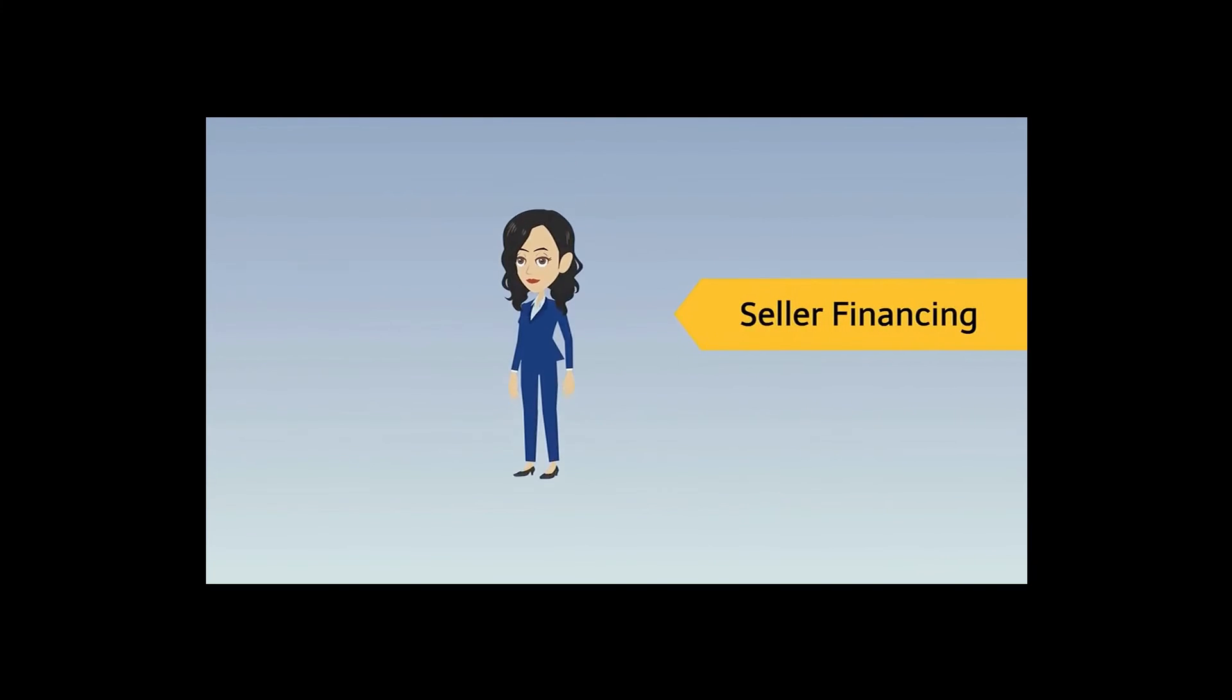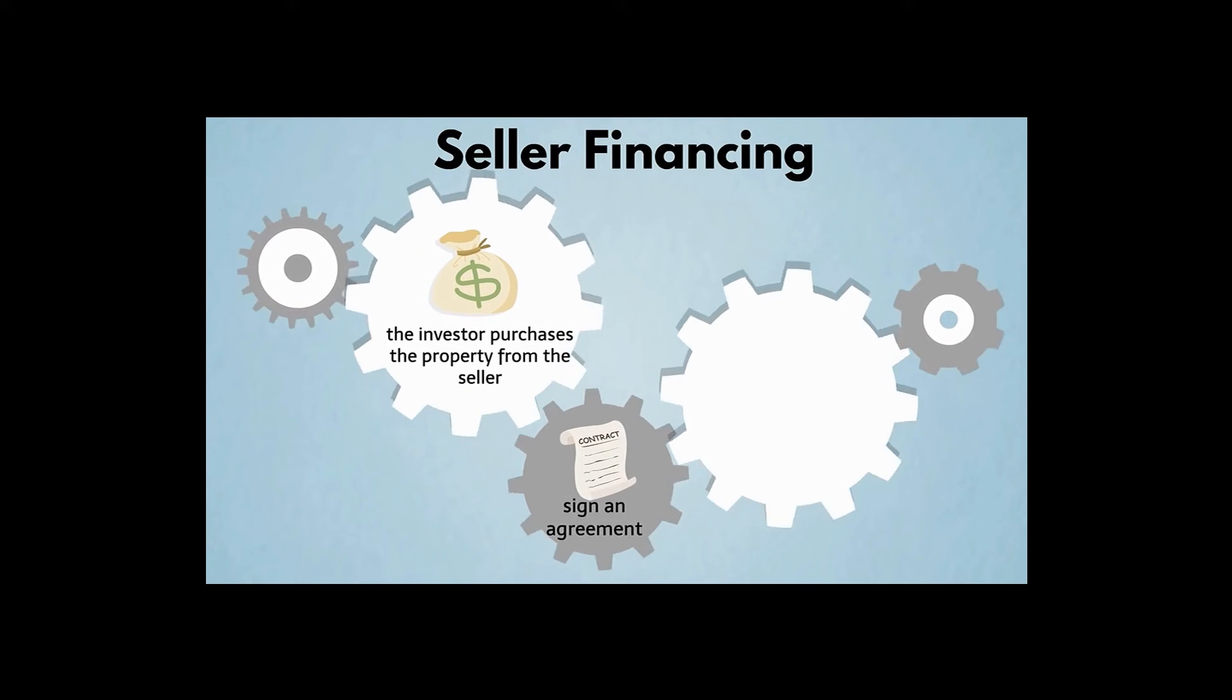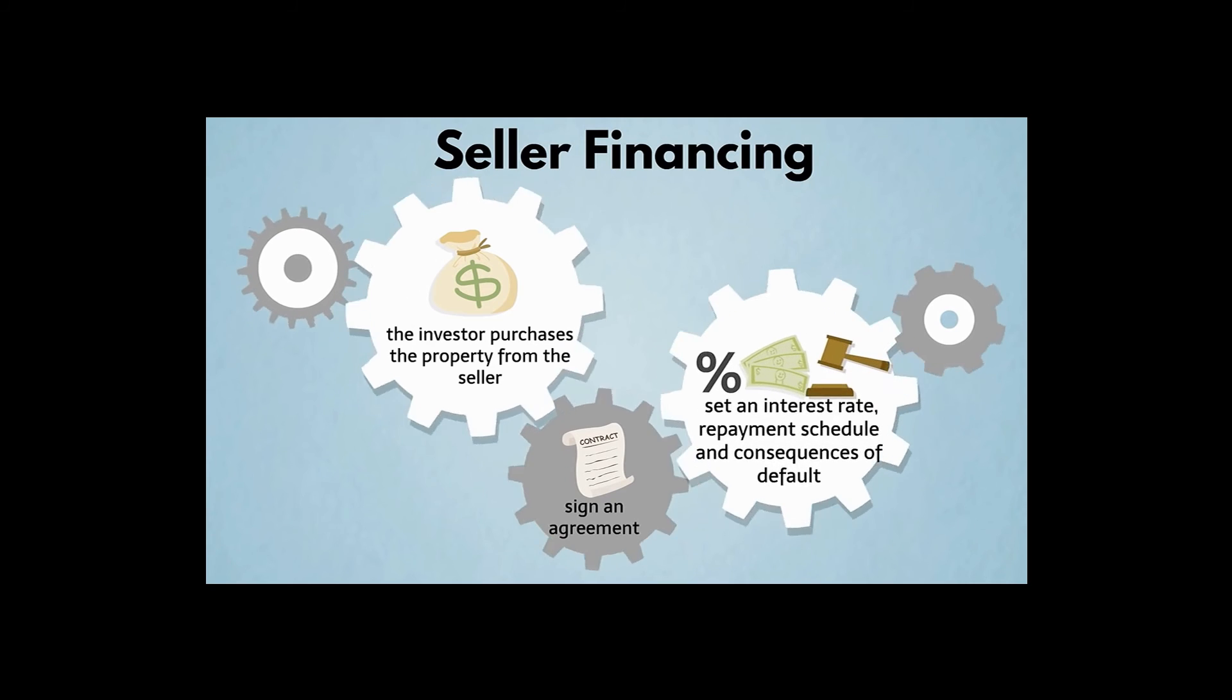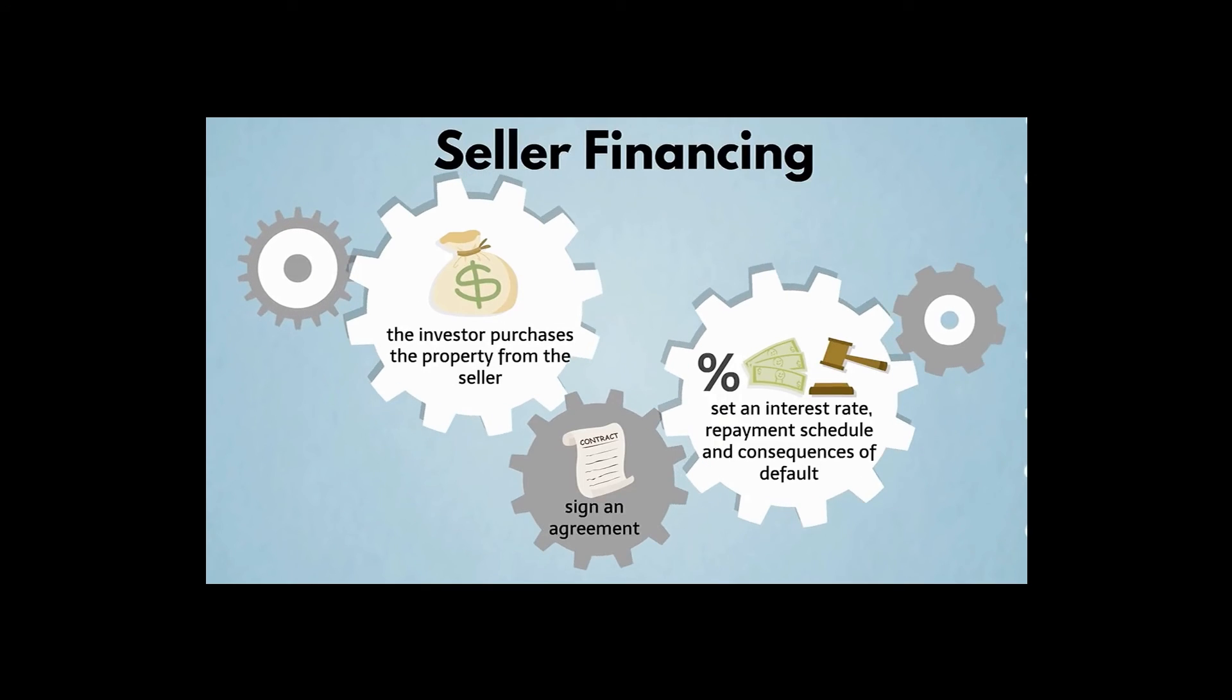Last, but certainly not least, investors can take advantage of seller financing to acquire a deal using someone else's money. Seller financing works like this. The investor purchases the property from the seller rather than the bank, and the two sides sign an agreement that identifies an interest rate, a repayment schedule, and the consequences of default.